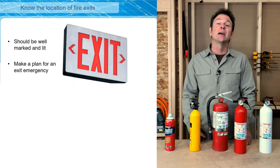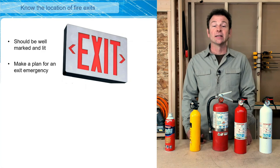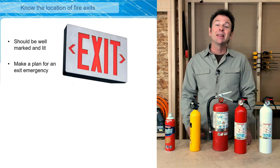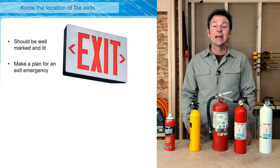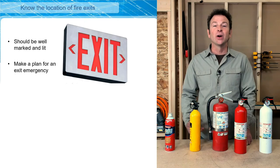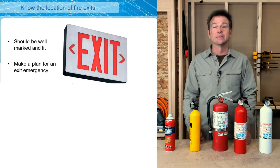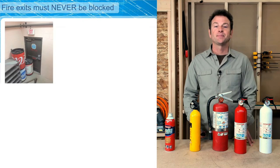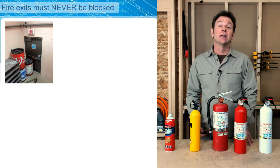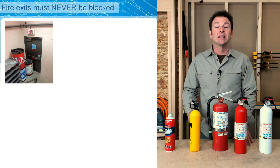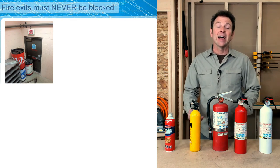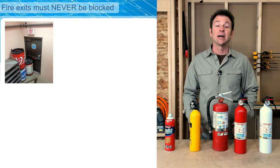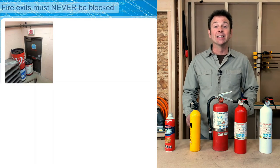Along with identifying fire extinguisher locations, we need to know our fire exits. This is something to do when you first arrive on the job site — lock it into your head. You may need to know exits when you can no longer see due to smoke. Fire exits should be well lit and provide a free, open path out of the building. As construction workers, it's very important that we never block fire exits. Here we see an example of a neglected fire exit — this is an unacceptable and illegal situation.